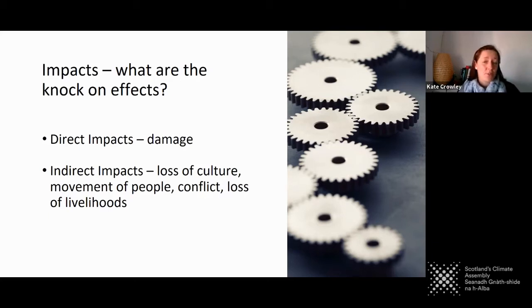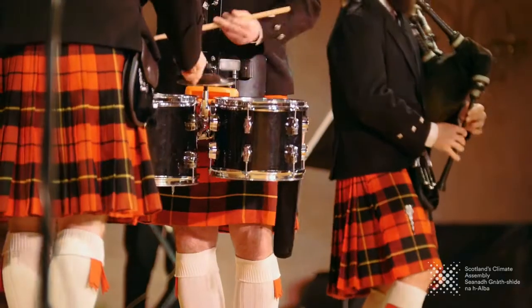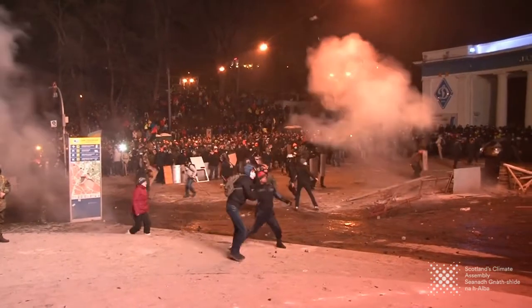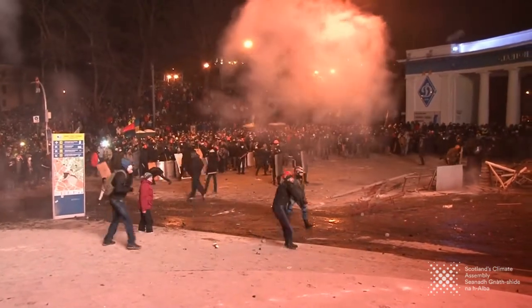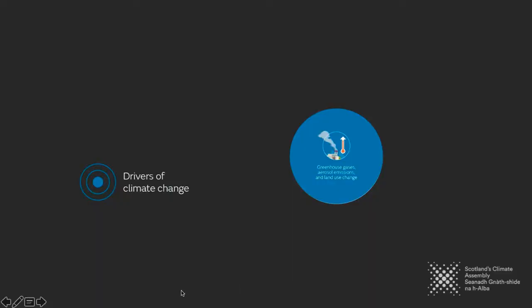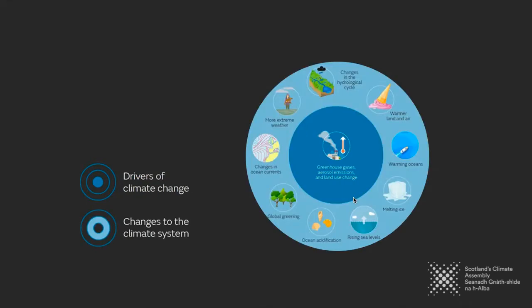Indirect impacts can also mean things like a loss of culture, a movement of people, and in a very worst case, it could even trigger things like conflict and loss of livelihoods. So it's really important for us to have a good understanding of the connections between the emissions we're putting into the atmosphere, the rising global temperatures we're experiencing, and how this plays out in terms of changes in our weather and climate.